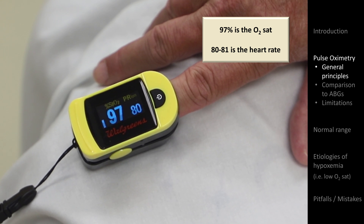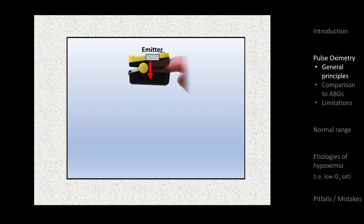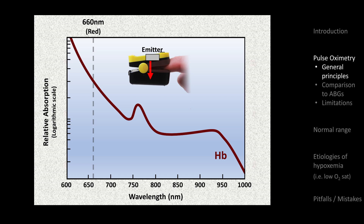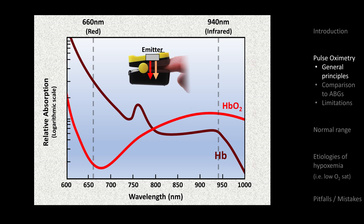The probe contains two light-emitting diodes: one diode that emits red light with a wavelength of 660 nm, which is the region of maximal absorption by deoxyhemoglobin, and one diode that emits infrared light with a wavelength of 940 nm, which is in the region of maximal absorption by oxyhemoglobin. A detector or sensor, usually placed on the opposite side of the probe, measures how much light of the two wavelengths was transmitted through the tissue, and using complex processing to include only the pulsatile blood from the arteries, it determines the ratio of interest.